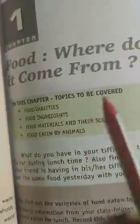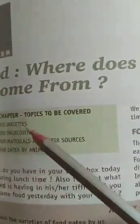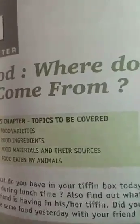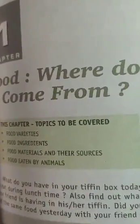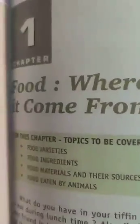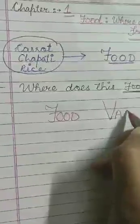That is our question, and to start this topic, if you look at your book, it says: topics to be covered in this chapter. What are you going to learn? First is food varieties — different kinds of food. Then food ingredients. Then food material and their sources. Then food eaten by animals. So the first topic of this chapter is food varieties.